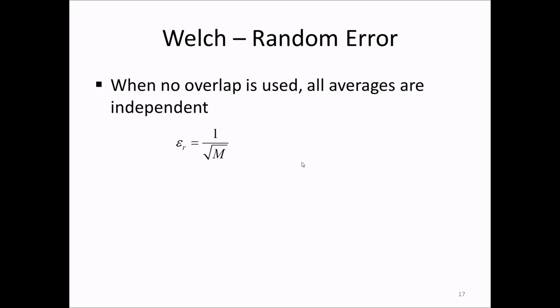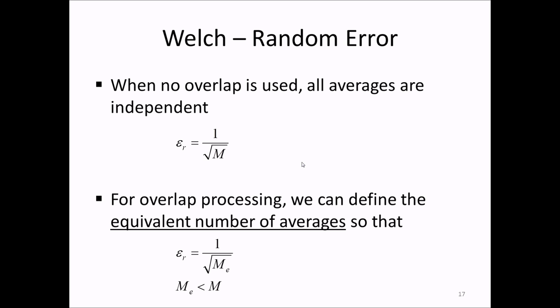We start by assuming no overlap. If we have m averages, we then obtain a normalized random error, epsilon sub r, equal to 1 over the square root of m. When we apply overlap, we now define the equivalent number of averages, m sub e, so that the actual random error we have is equal to 1 over square root of m sub e. Of course, m sub e will always be smaller than m if we use overlapping.